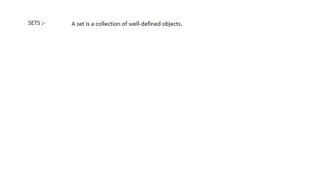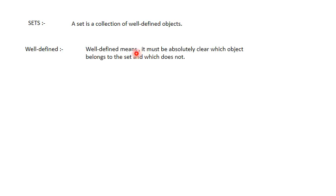So, what is a set? A set is a collection of well-defined objects. Well-defined means it must be absolutely clear which object belongs to the set and which does not.